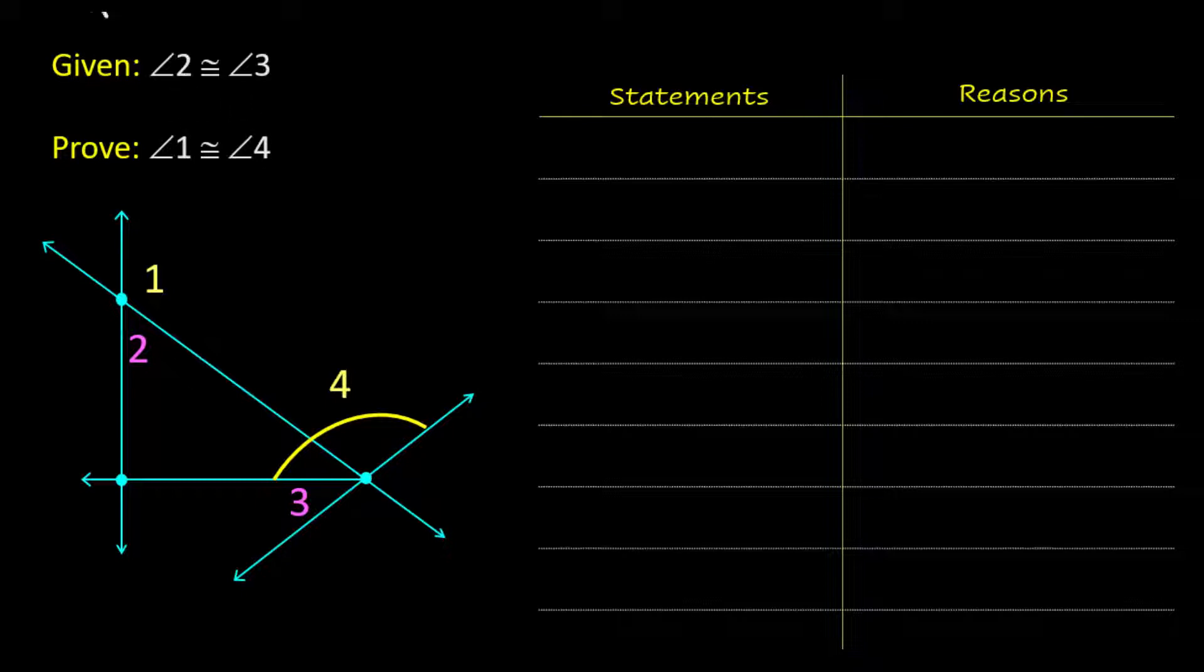Given that angle 2 is congruent to angle 3, we are supposed to show that angle 1 and angle 4 are also congruent or the same size.